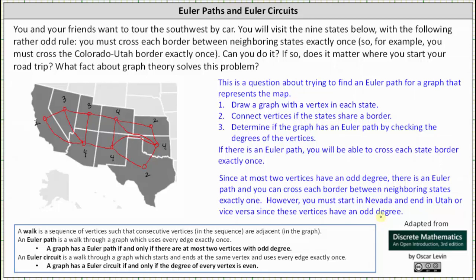Before we go, let's show a possible Euler path — a possible trip that would satisfy this rather odd travel rule. Let's say you decide to start in Nevada, which means you will need to end in Utah. We form a walk that uses each edge exactly once, and the walk ends in Utah. This is one possible Euler path. Notice how this does result in you traveling to several states multiple times. I hope you found this helpful.